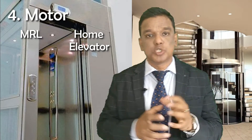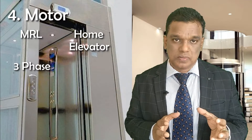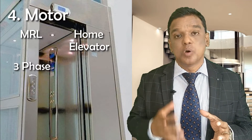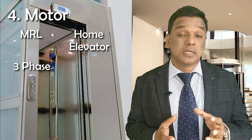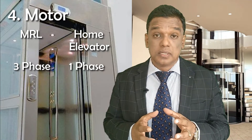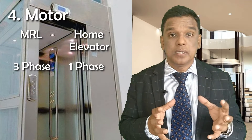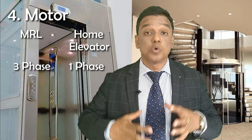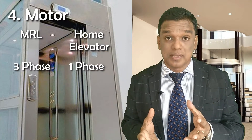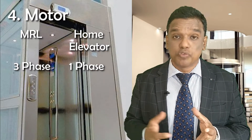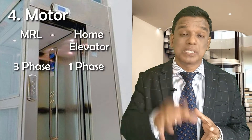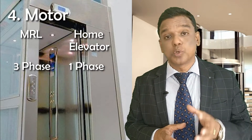Point number four is the motor. In MRL — machine room less elevator — the motor used is a three-phase motor, so the customer has to provide three-phase power supply. At the same time, in a home elevator the motor is a single-phase motor. A home elevator is typically installed where the customer does not have three-phase power supply or where three-phase supply is not available in the area. In that case, a single-phase motor is used and a home elevator is the best option compared to MRL.